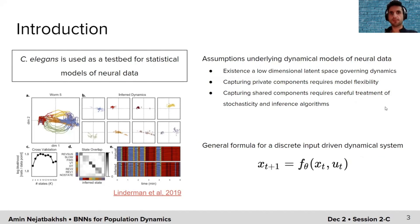C. elegans is used in neuroscience as a testbed for statistical models of neural data, predictive and generative models of neural data. Here, I've included this figure from a paper by Professor Linderman, developing a model called Recurrent Switching Linear Dynamical Systems, and providing insights about different linear pieces of neural dynamics that could be relevant to observed behavior.